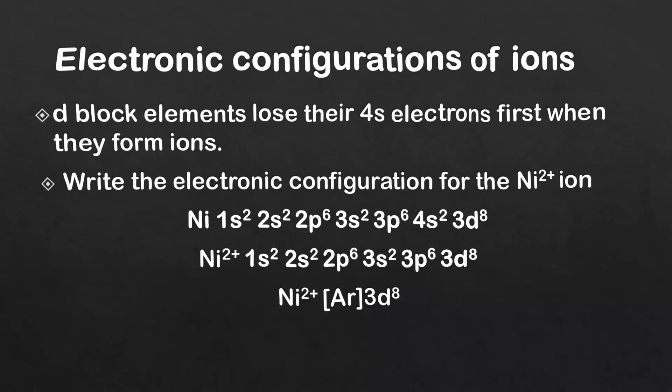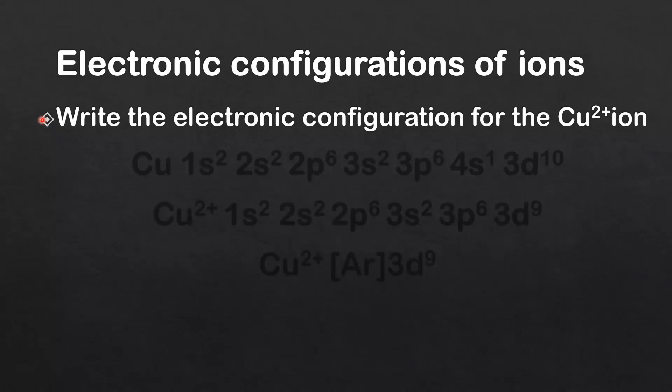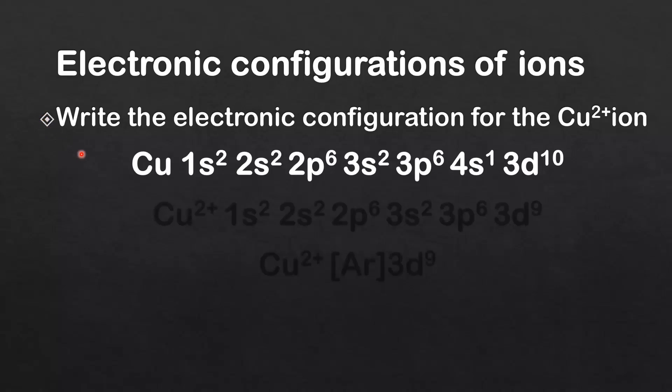So let's try one more example. Write the electronic configuration for the Cu2+ ion. So here's the electronic configuration for the copper atom. And as you can see, it's an exception to the Aufbau principle. It has the full 3d sublevel. So when it forms the 2 plus ion, it's going to lose one of these 4s electrons first. And then it's going to lose a 3d electron.